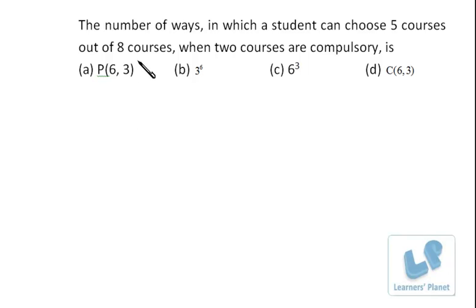From the remaining six courses, right? So eight courses are there, two are compulsory, so there is no choice at all. From the remaining six courses, he has to choose three more.